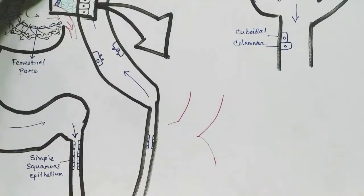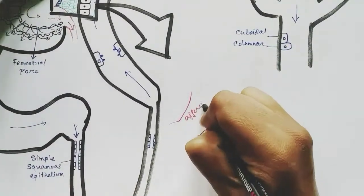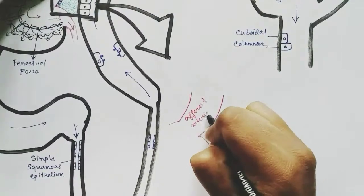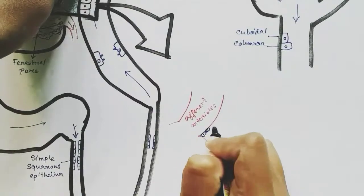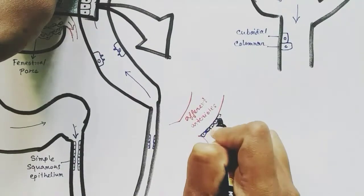This is the afferent arteriole on which the juxtaglomerular cells are present. These are the juxtaglomerular cells.